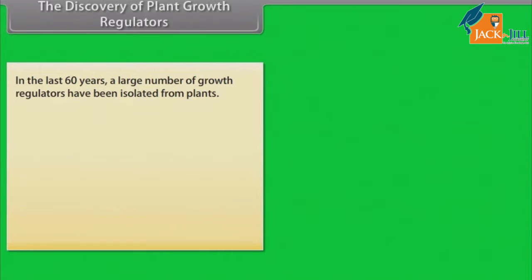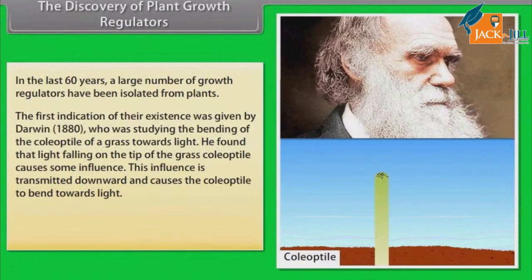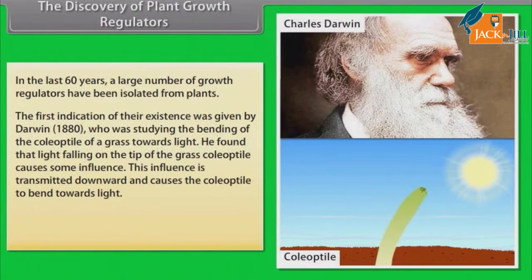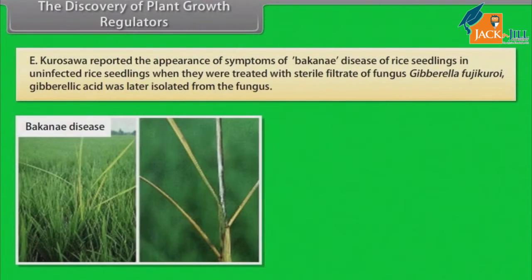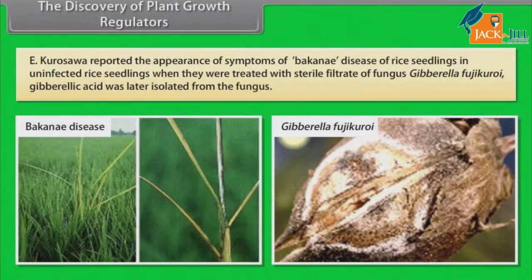The discovery of plant growth regulators: In the last 60 years, a large number of growth regulators have been isolated from plants. The first indication of their existence was given by Darwin (1880), who was studying the bending of the coleoptile of a grass towards light. He found that light falling on the tip of the grass coleoptile causes some influence, transmitted downward, causing the coleoptile to bend towards light. F.W. Went later isolated auxin from the tip of the coleoptiles. E. Kurosawa reported the appearance of symptoms of Bakanae disease of rice seedlings in uninfected rice seedlings when they were treated with sterile filtrate of the fungus Gibberella fujikuroi; gibberellic acid was later isolated from the fungus.